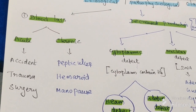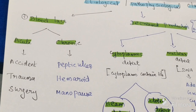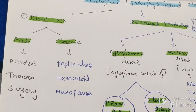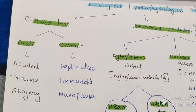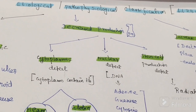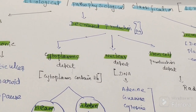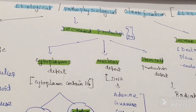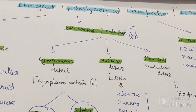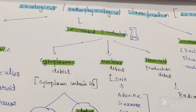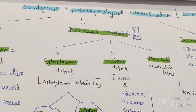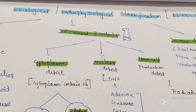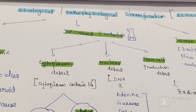Acute blood loss occurs suddenly in accidents, trauma, or surgery. Chronic means daily small amounts of blood loss, such as from peptic ulcer, hemorrhoids, or menopause. The second cause is decreased production in the bone marrow. Because of some problem, production is not taking place properly, so the overall RBC level is low and hemoglobin level decreases, causing anemia.